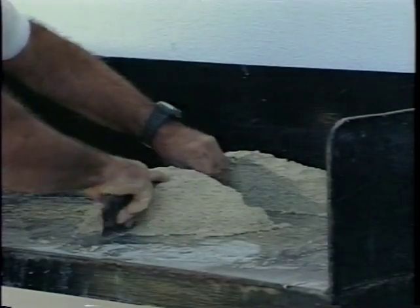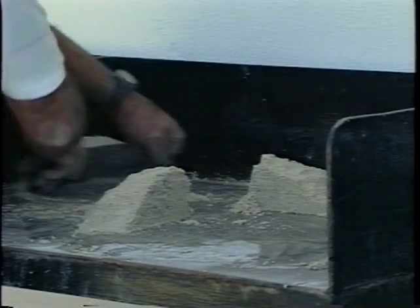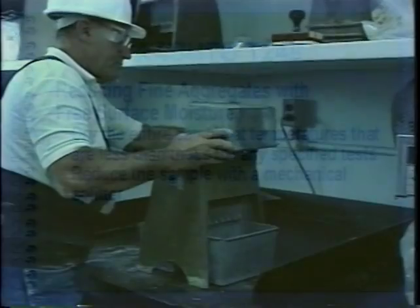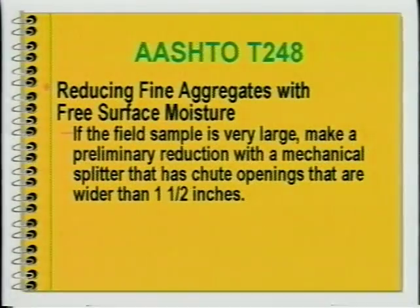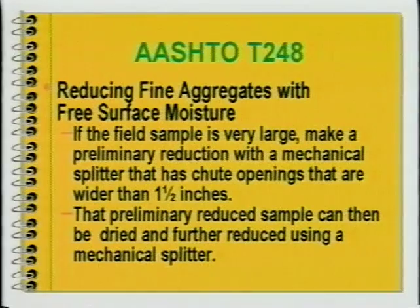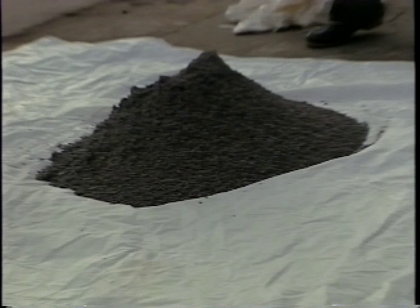Samples of fine aggregate that have free surface moisture may be reduced by quartering, drying the entire sample at temperatures that are less than those for any specified tests, and reducing the sample with a mechanical splitter or cone splitter. Or if the field sample is very large, you may make a preliminary reduction using a mechanical splitter that has shoot openings wider than one and a half inches. That preliminary reduced sample can then be dried and further reduced using a mechanical splitter. Or treat the entire sample as a miniature stockpile.